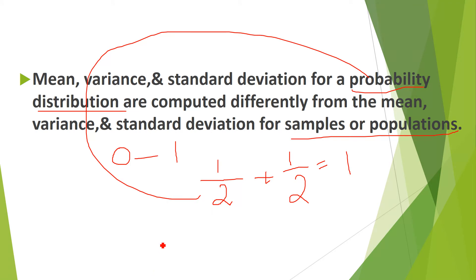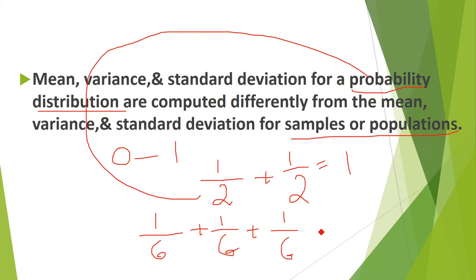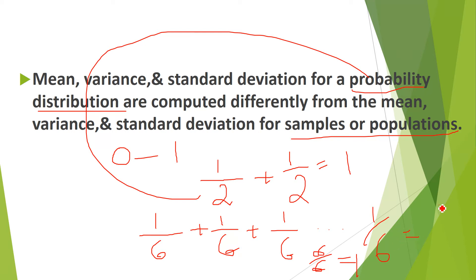Similarly, when we roll a die there are 6 numbers, 1 to 6, and each side has a probability of 1/6. Adding all six gives us 6/6 which equals 1. In the case of a die we have distributed probability into 6 equal parts of 1/6 each. Note that probabilities don't have to be equal as long as they sum to 1.